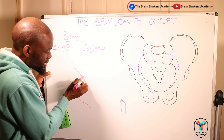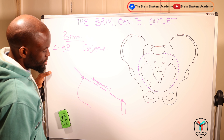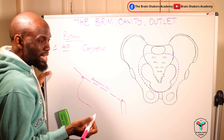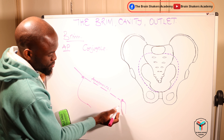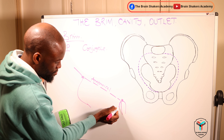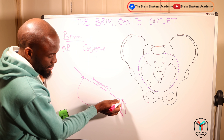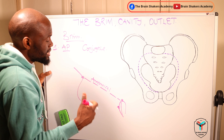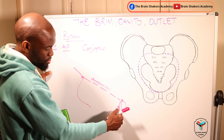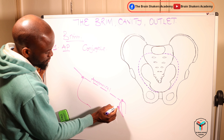The pelvic brim has three subdivisions of anteroposterior diameters and we call them conjugates. We have the sacral promontory here and the symphysis pubis on the other end. We are measuring from the upper border of the symphysis pubis all the way to the sacral promontory. The first one — from the upper border of the symphysis pubis to the sacral promontory — is what we call the anatomical conjugate.